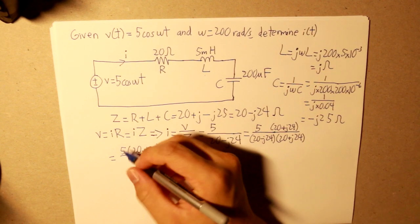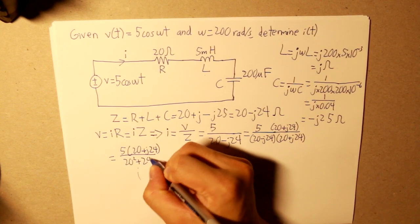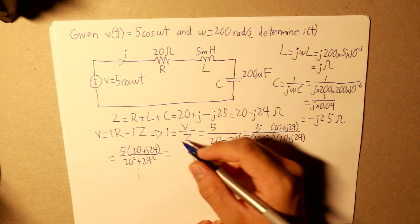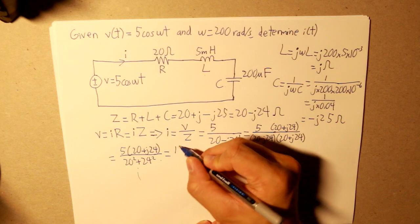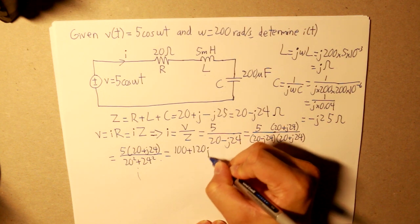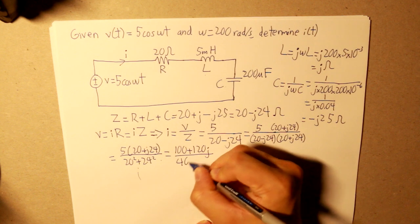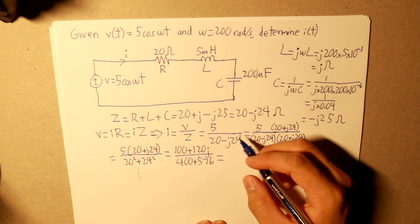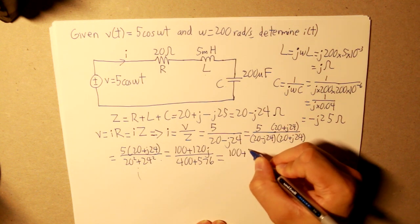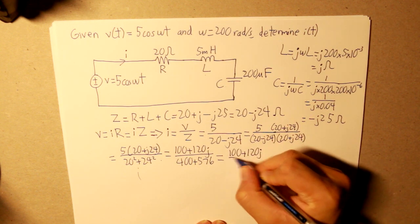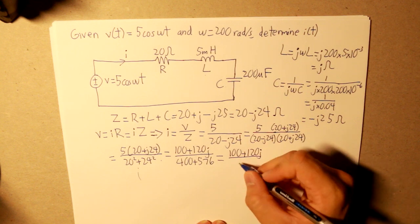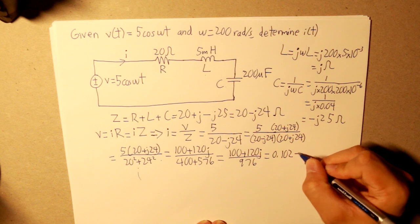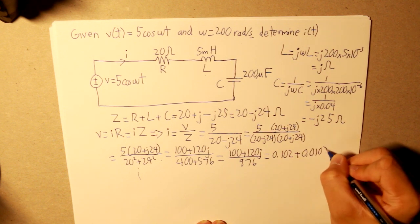So what we get in the end is 5 times 20 plus j24. And then we get 20 squared plus 24 squared. And what we get in the numerator is 100 plus 120j, and in the denominator 400 plus 576. We simplify them out by adding both terms in the denominator. And what we get is 0.102 plus 0.123j.